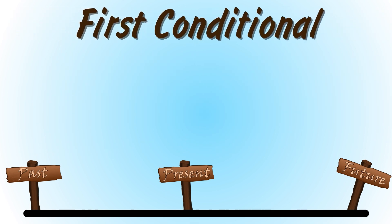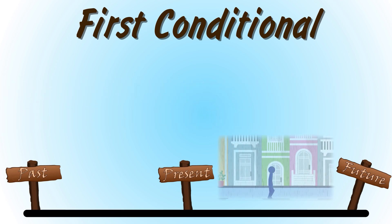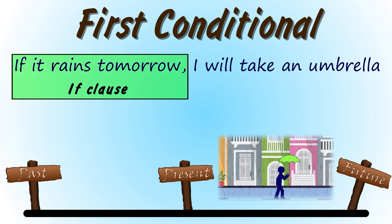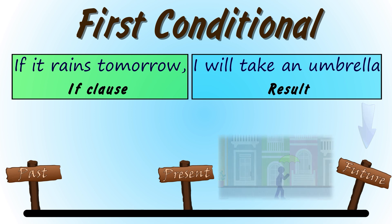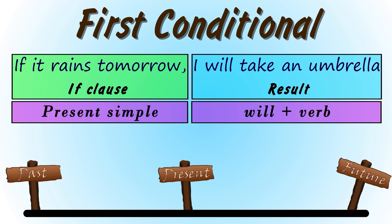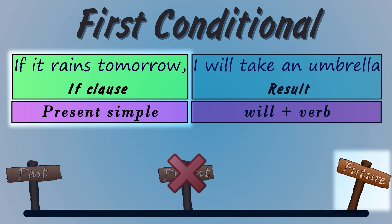Now let's take a look at the first conditional. We use the first conditional to talk about future situations we believe are real or possible. For example, if it rains tomorrow, I will take an umbrella. The if clause tells us about a possible future situation, and the result clause tells us the consequence. The structure is the if clause in the present simple and will plus verb. Although the if clause is in the present simple, in a first conditional it refers to a possible future situation, not a present situation.